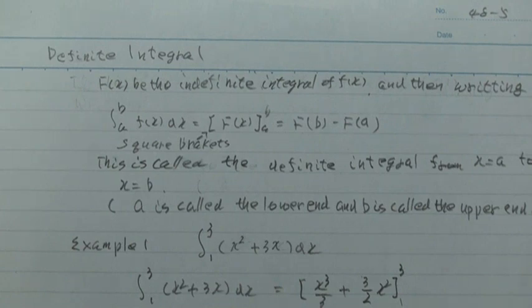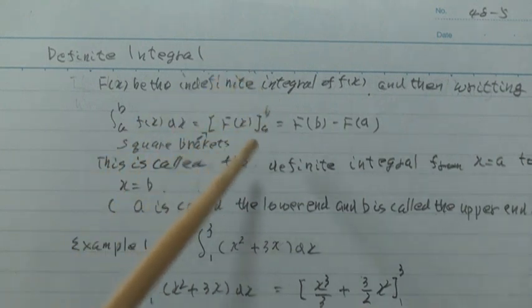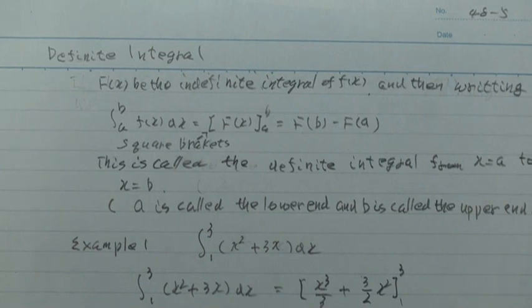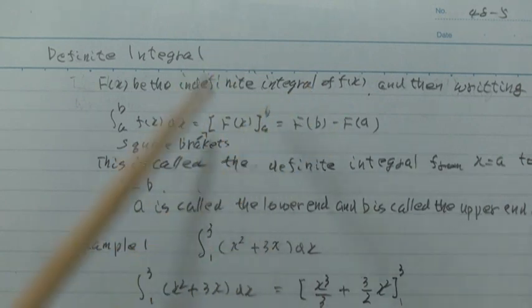Let F(x) be the indefinite integral of f(x). Then writing the integral from a to b of f(x)dx equals [F(x)] from a to b, which equals F(b) minus F(a).